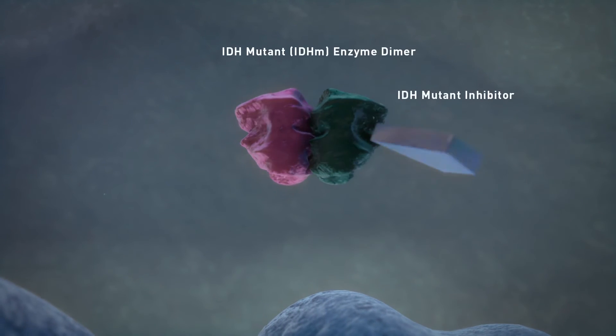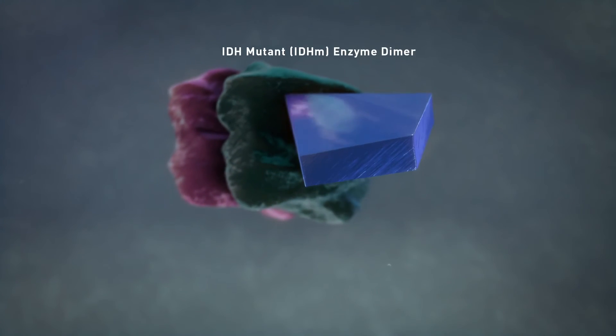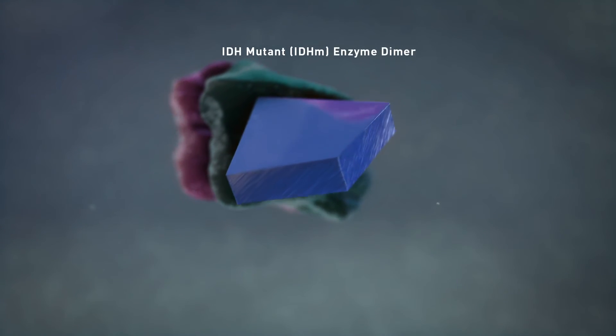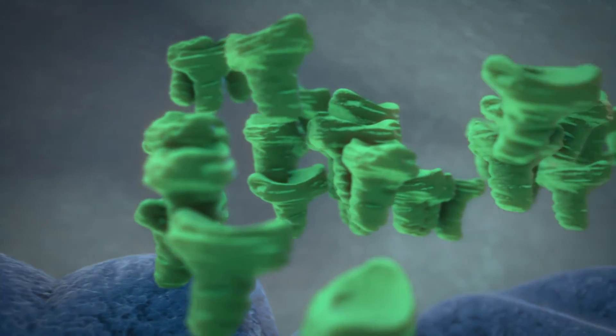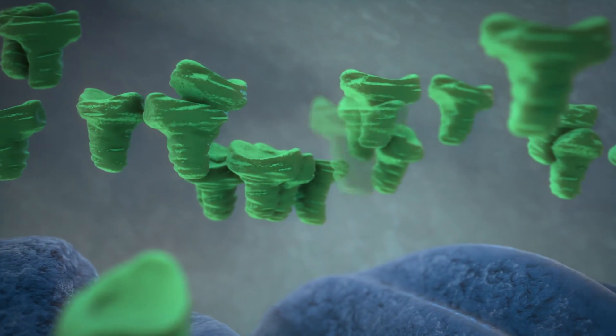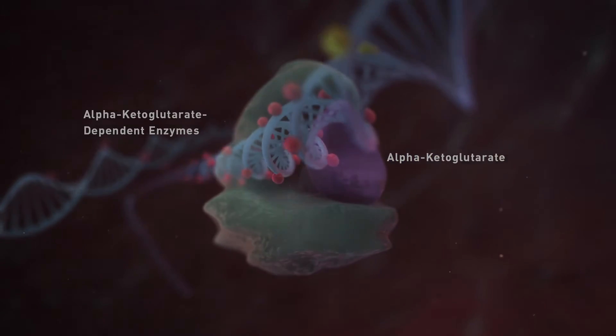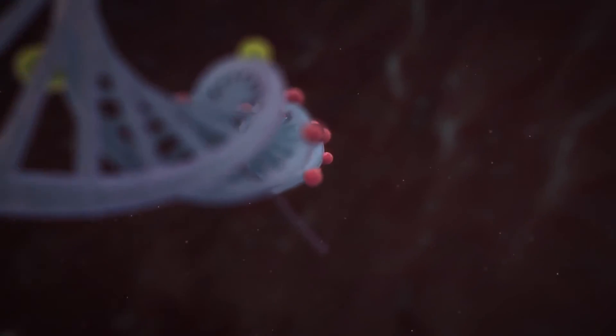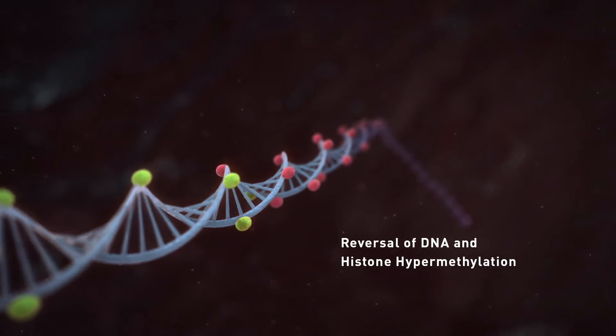Inhibition of the IDH-mutant enzyme prevents 2-HG production and is believed to help restore cellular metabolism. The decrease in 2-HG levels allows alpha-ketoglutarate to bind to alpha-ketoglutarate-dependent enzymes, and may restore function of DNA and histone-modifying enzymes. This can result in reversal of DNA and histone hypermethylation.